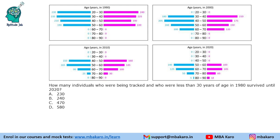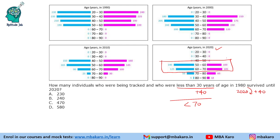The third question: how many individuals who were being tracked and who were less than 30 years of age in 1980 survived until 2020? Less than 30 in 1980 and 2020 means 40 years later. So they were less than 30 — add 40 — so they will be less than 70 years in 2020. In 2020, the number of people less than 70 is 240 plus 230, a total of 470 people.